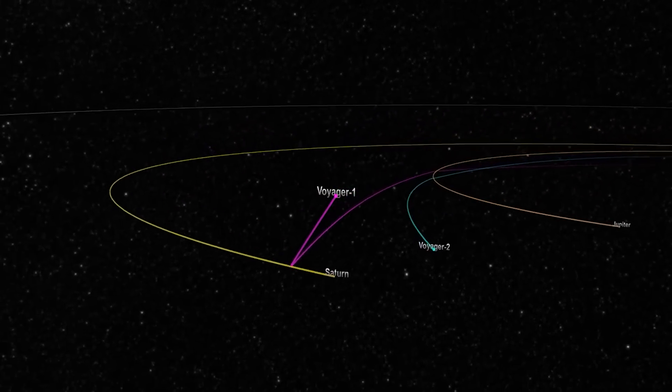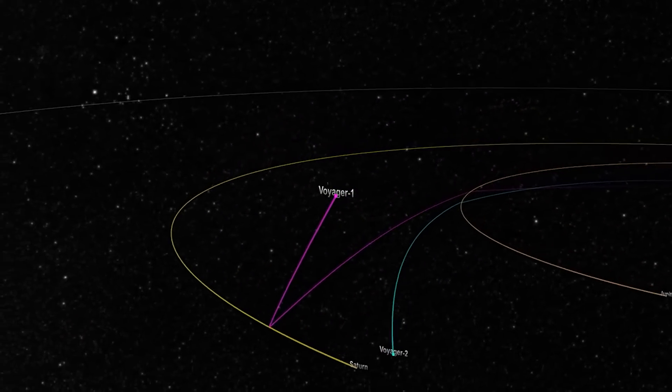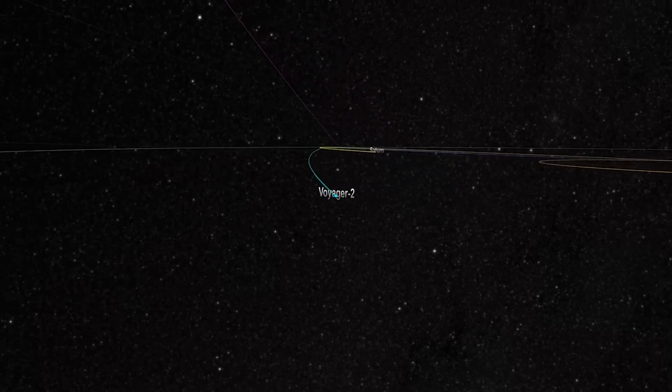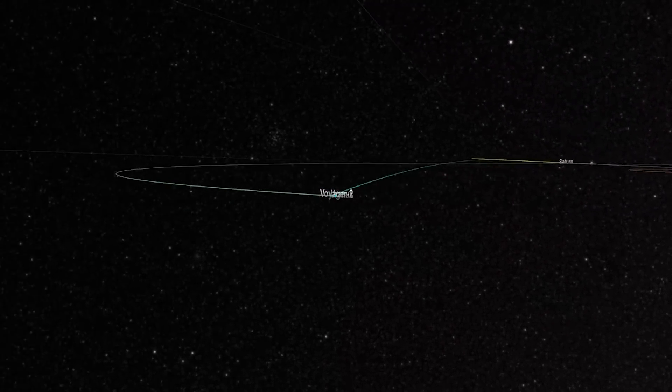Voyager 1 took an elliptic turn, heading straight for the heliosphere, while Voyager 2 carried on to two other planets as planned.